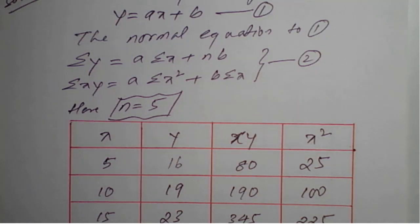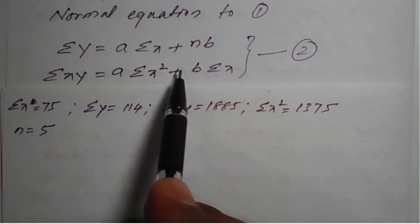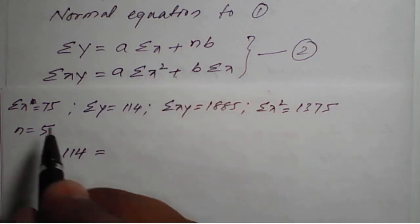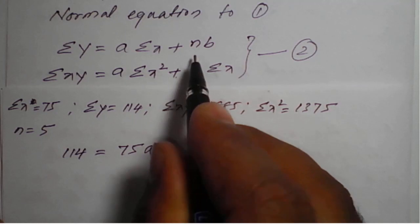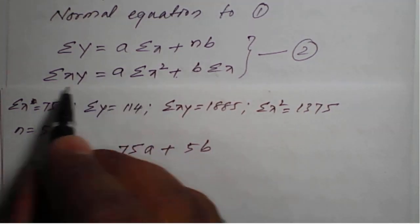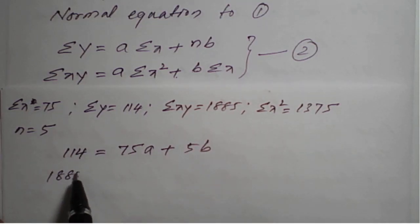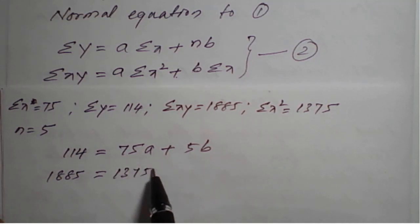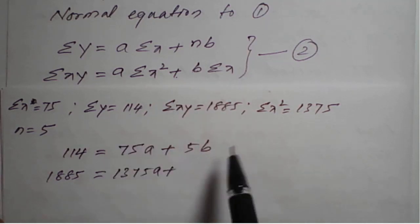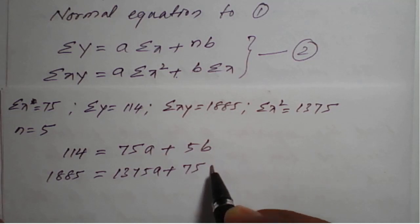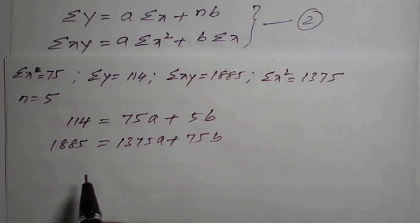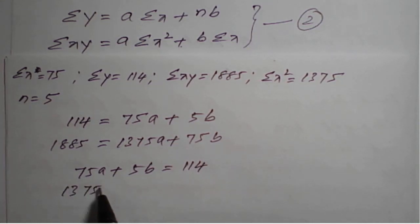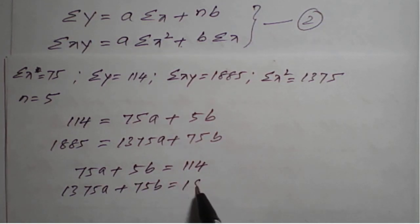Then we will form our equations. Those equations we have to solve and we will get the values of a and b. Applying in equation number 2: summation y is 140 equal to summation x 75 into a plus n value 5 into b. Second equation: summation xy 1885 equal to a into summation x square 1375 into a plus b into summation x 75 into b. Rearranging: 75a plus 5b equals 140, and 1375a plus 75b equals 1885.